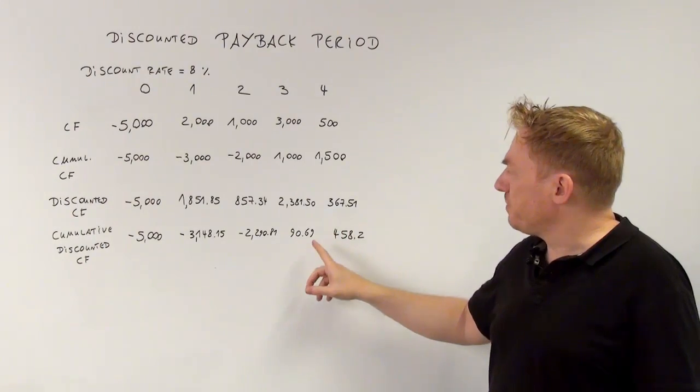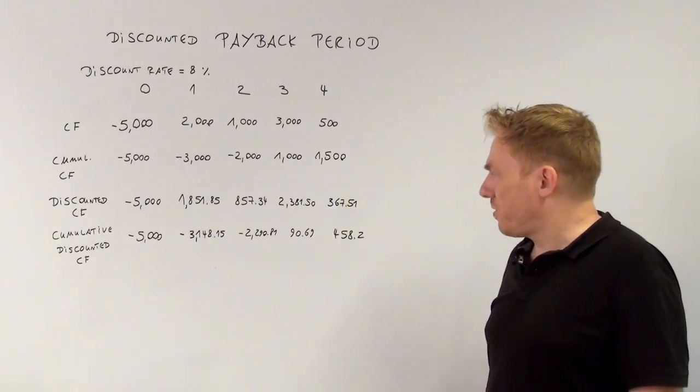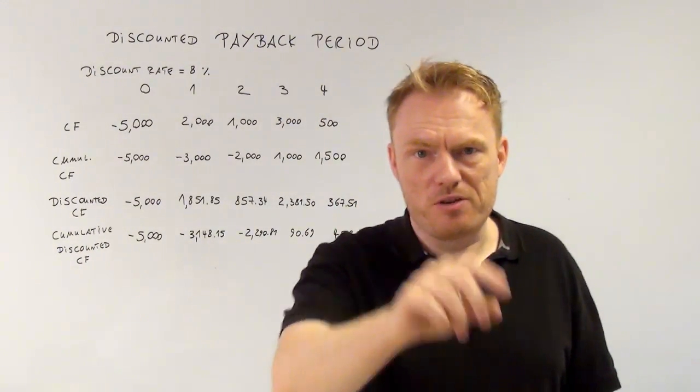So the discounted payback period also equals three. That's important for now, for you to understand.